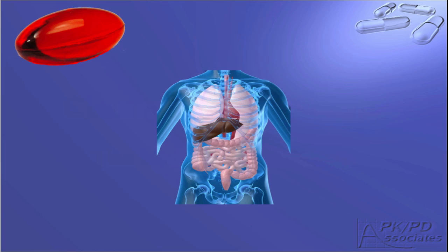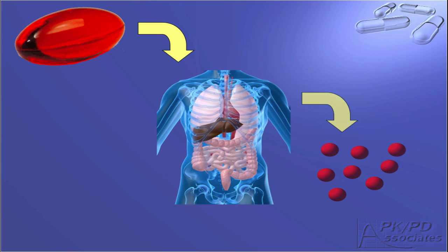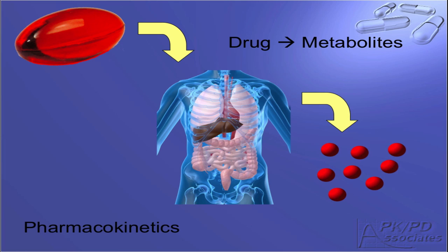As we learned previously, when we ingest a drug, it is absorbed into the bloodstream, and then it is converted into metabolites. This process is called pharmacokinetics.